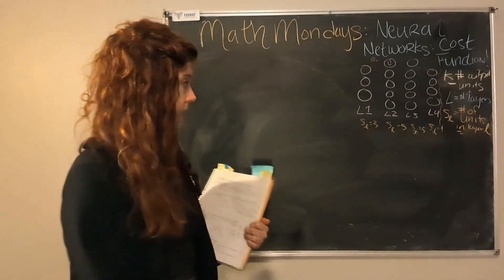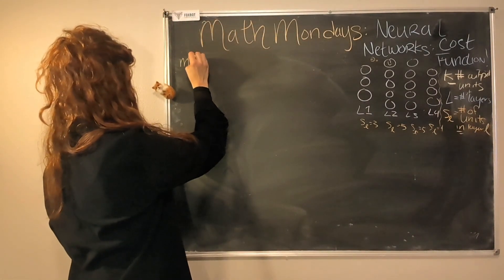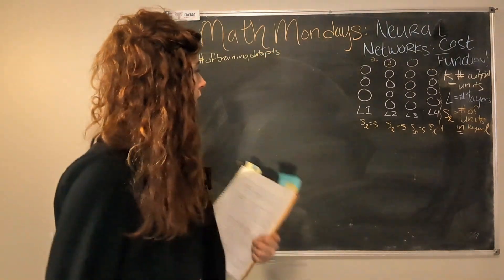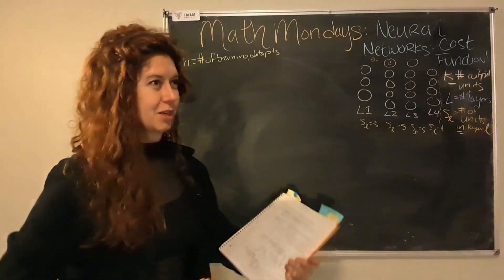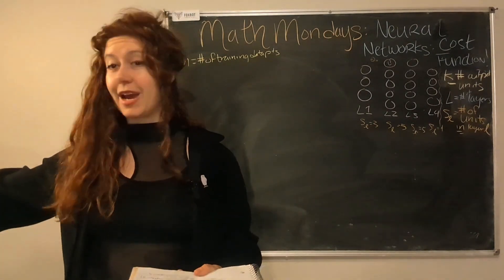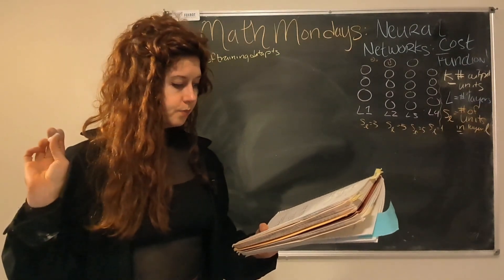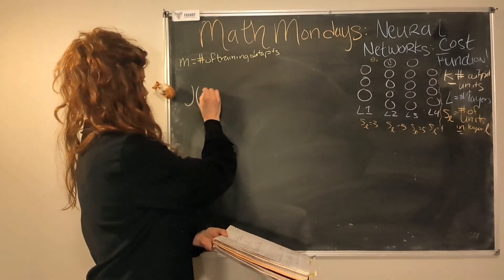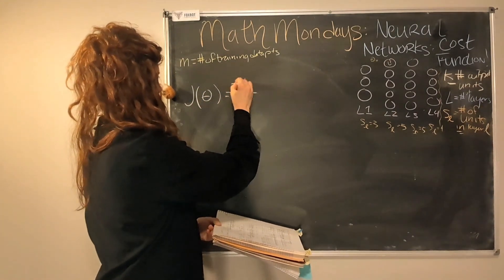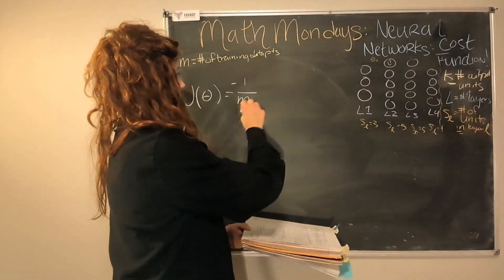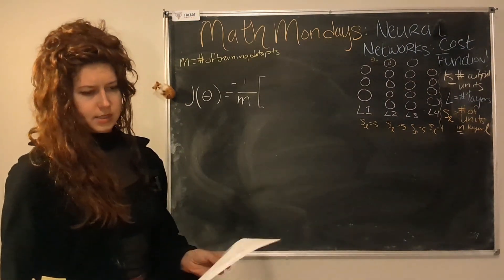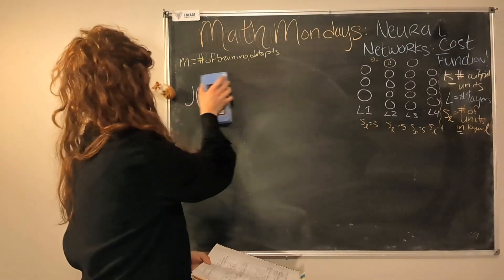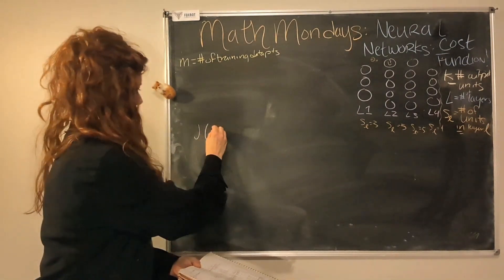And then we also have a training data set. We're going to have M equals the number of training data points. So let's write down our cost function for binary classification, where K equals one — we just have one output layer. So it is going to be J of theta. We're going to divide by the number of training examples, add a little minus sign there, and then multiply by a summation. This is going to be a big equation.